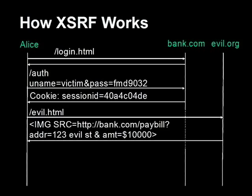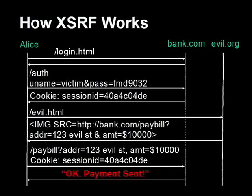The tag specifically says: go make a request to this pay-bill script at bank.com to get this 'image,' and supply these parameters — the attacker's address and the amount, in this case $10,000. Alice's browser wants to do a good job, so it makes a request to bank.com, calls the pay-bill script as requested, passes the parameters, and since the browser was already logged into bank.com, it sends the bank.com cookie. Bank.com gets this request from Alice saying she should pay a bill to 123 Evil Street in the amount of $10,000, looks at the cookie, finds it completely legitimate, and goes ahead and issues the payment.